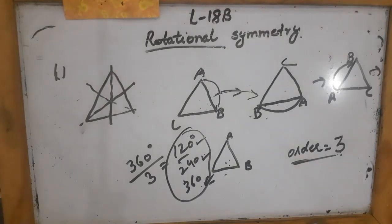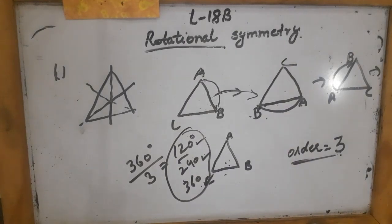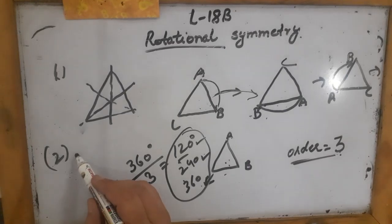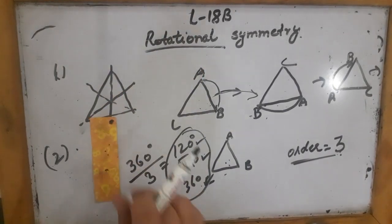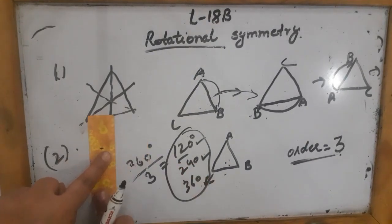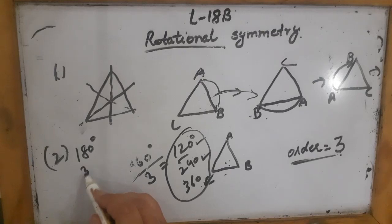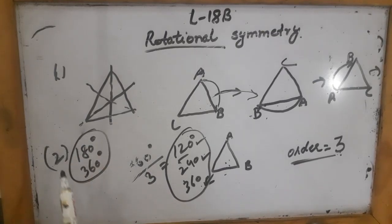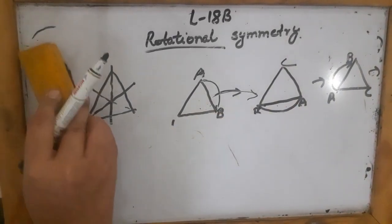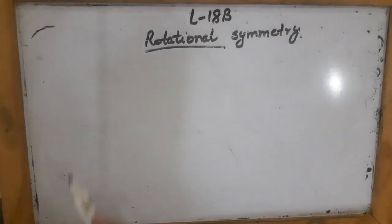In the second question they are saying: through what different angles should a rectangle be rotated to be in a symmetrical position with the original position? Meaning at what angle does it look the same? For a rectangle, it does not look the same at 90 degrees, but at 180 degrees it does, and again at 360 degrees. So the answer for the second question is 180 degrees and 360 degrees.